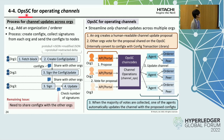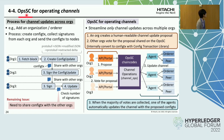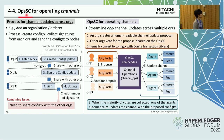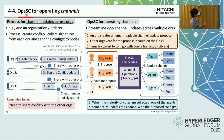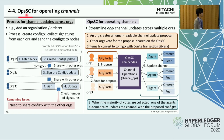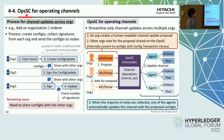This slide shows OPSSC for operating channels. It shows processes for channel updates across multiple organizations, like adding an organization. In this typical process, an organization creates a config.tx to update the channel config, and then other organizations sign the config.tx. As a remaining issue, it needs to share the config.tx with other organizations. OPSSC streamlines such channel updates across multiple organizations, and the sequence is the same as for operating chain code.